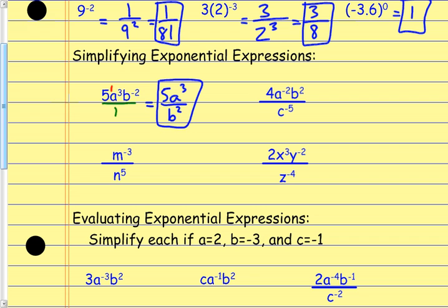For the next one, only the things with negative exponents move. This is 4 to the first power — that negative 2 only applies to the a. So the 4 stays where it is, the b squared stays where it is, but the a to the negative second gets sent to the denominator as a squared. And the c to the negative fifth that's already in the denominator gets flipped to the numerator as a positive exponent. So if you have a negative in the numerator, it goes to the denominator; if you have a negative in the denominator, it bumps up to the numerator.